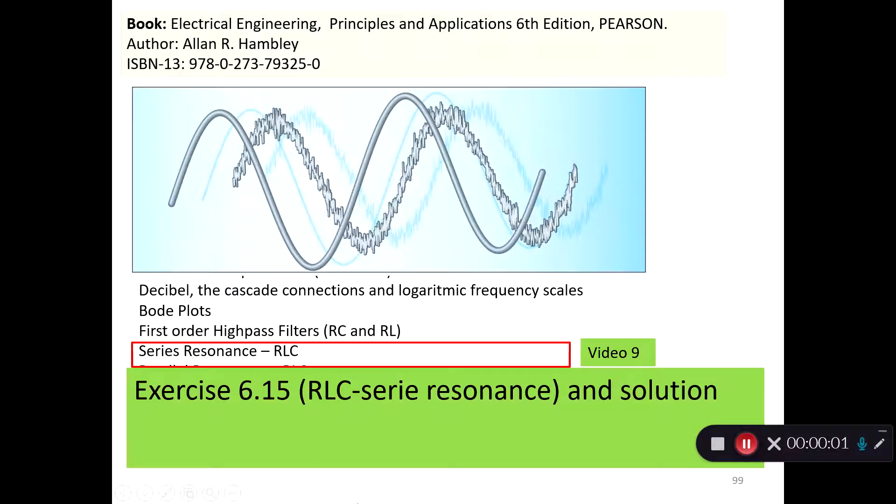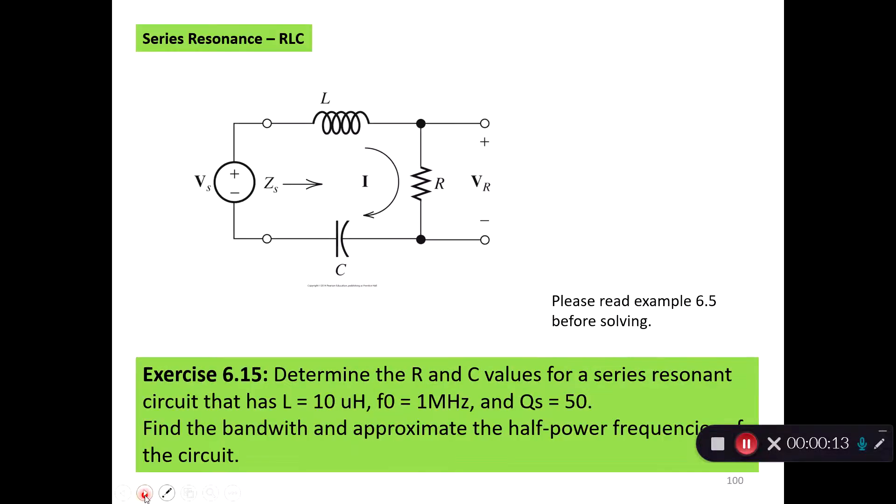Welcome to exercise 6.15 on RLC series resonance and the solution. Exercise 6.15: Determine the resistor and capacitor values for a series resonant circuit that has an inductance of 10 microhenry, a resonance frequency of 1 MHz, and a quality factor Qs of 50.